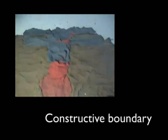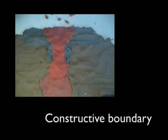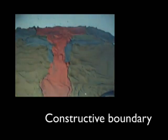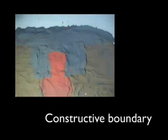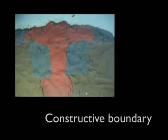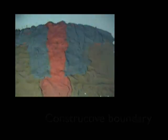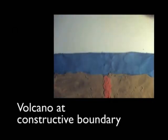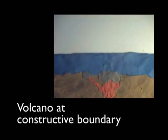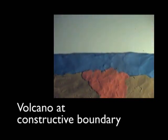Volcanoes also occur at constructive boundaries where two tectonic plates are moving apart from each other. This movement means magma can rise to the surface between the two tectonic plates. Once the magma erupts onto the surface at a constructive boundary, it will cool and solidify. This process means more crust is made and the plates are slowly pushed apart.